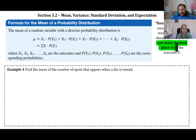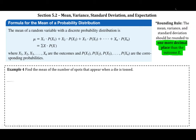Section 5.2 covers mean, variance, standard deviation, and expectation. This section is really important if you want to go into actuarial science, the insurance industry, or financial trading, so pay close attention.